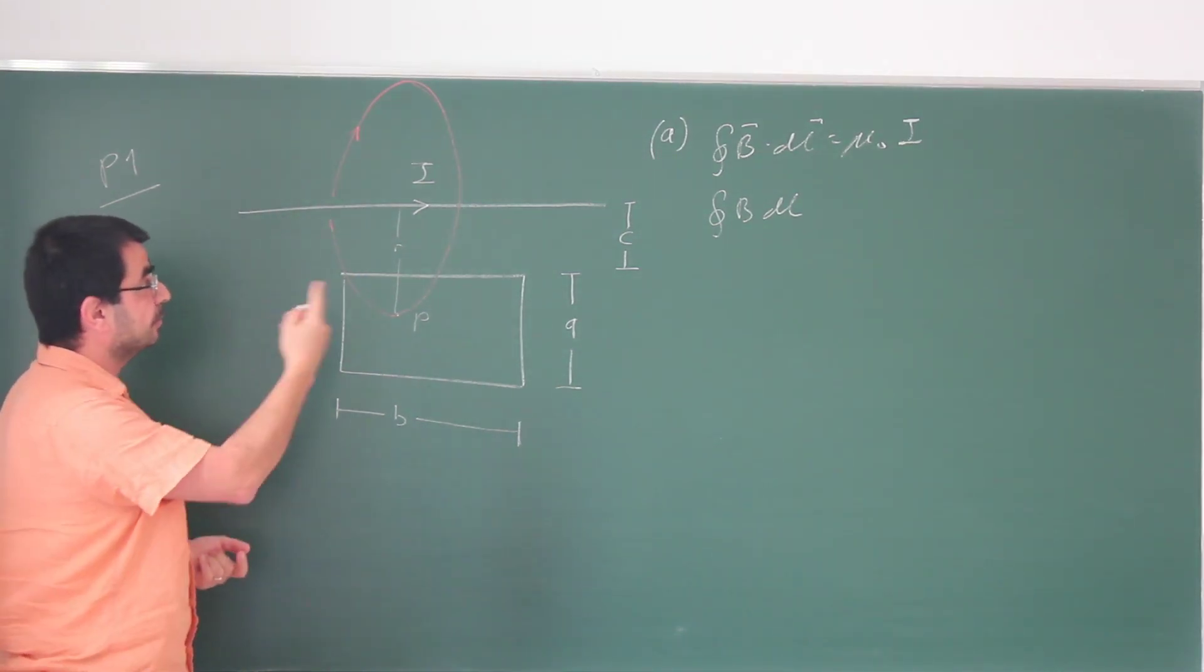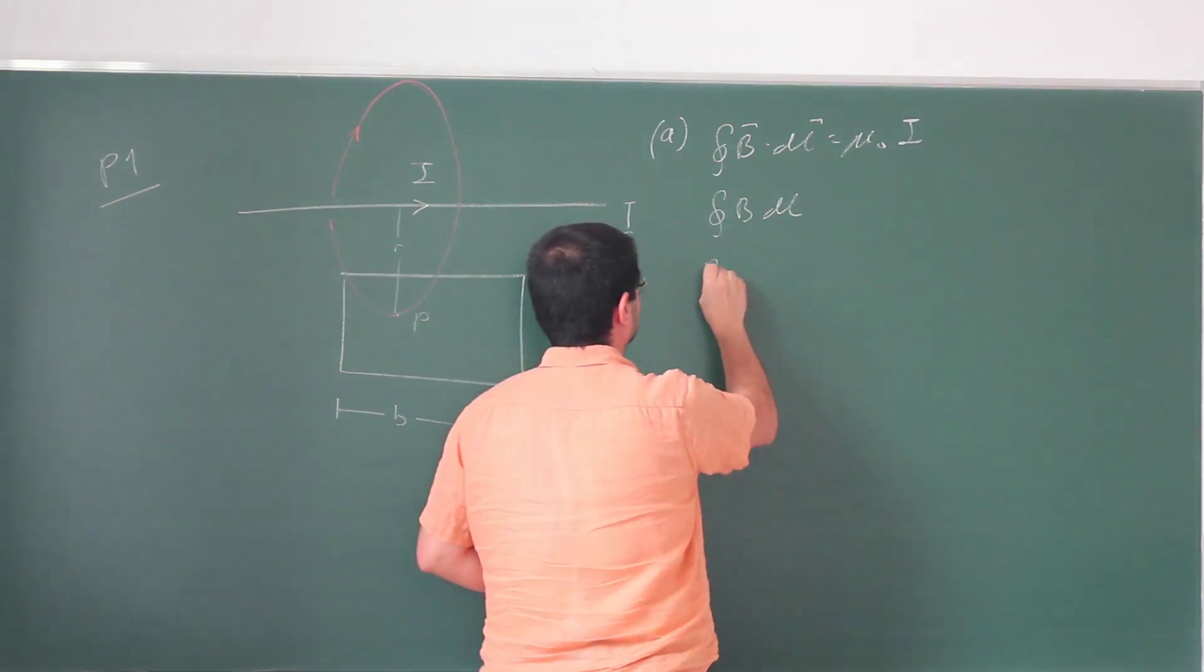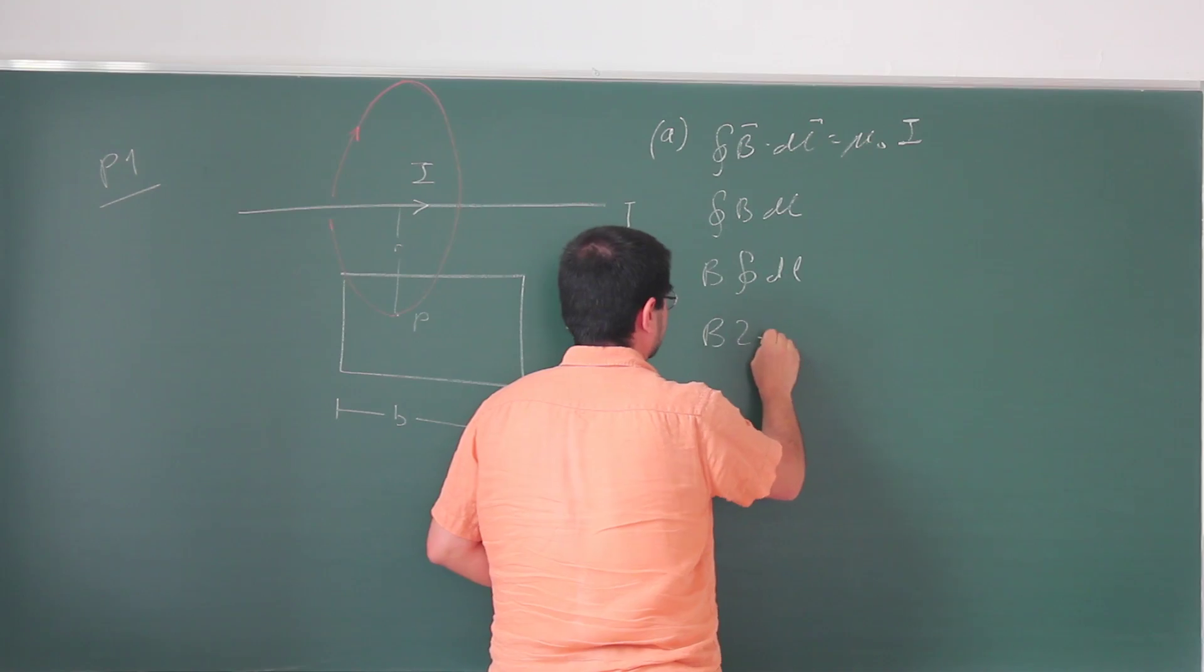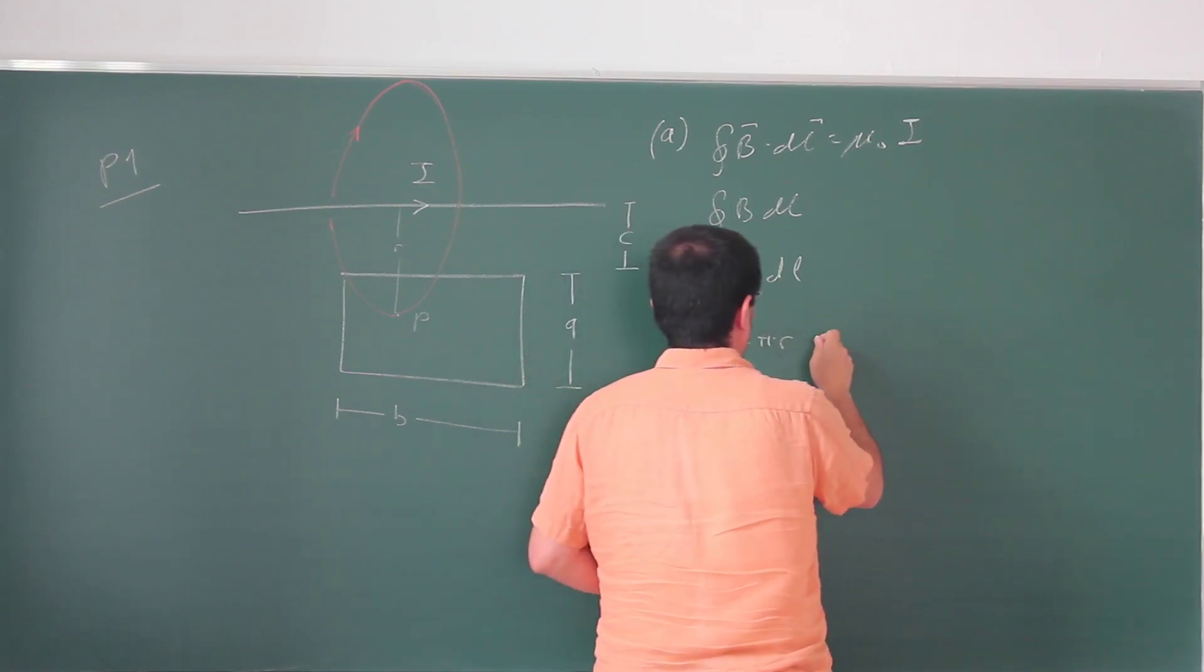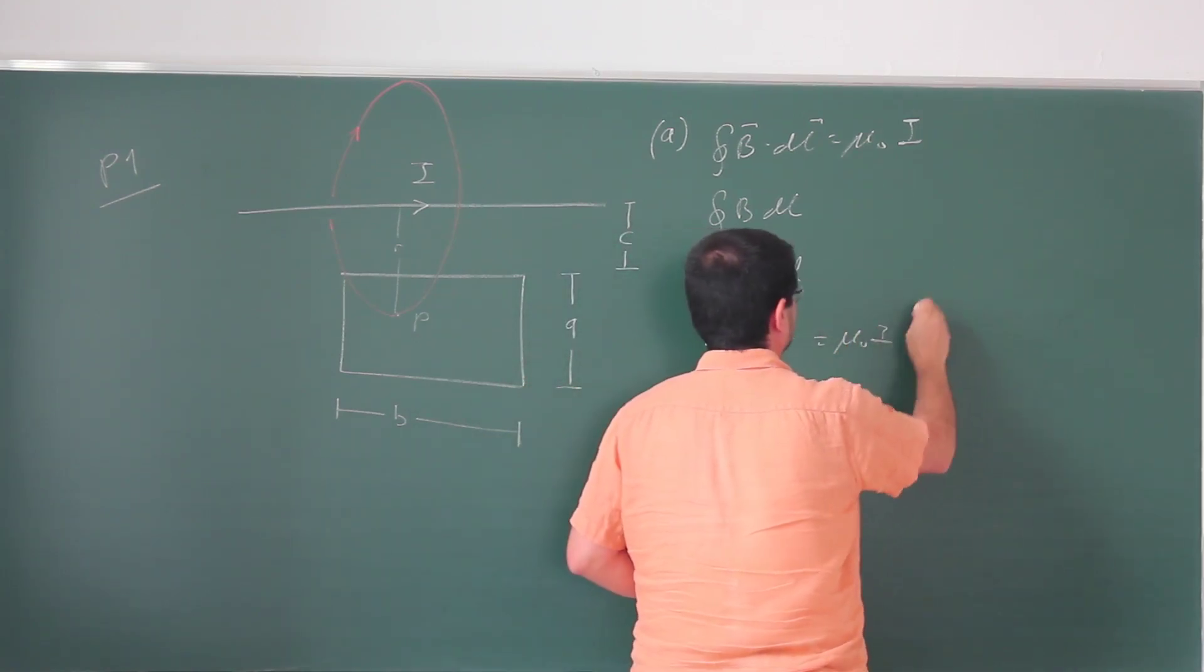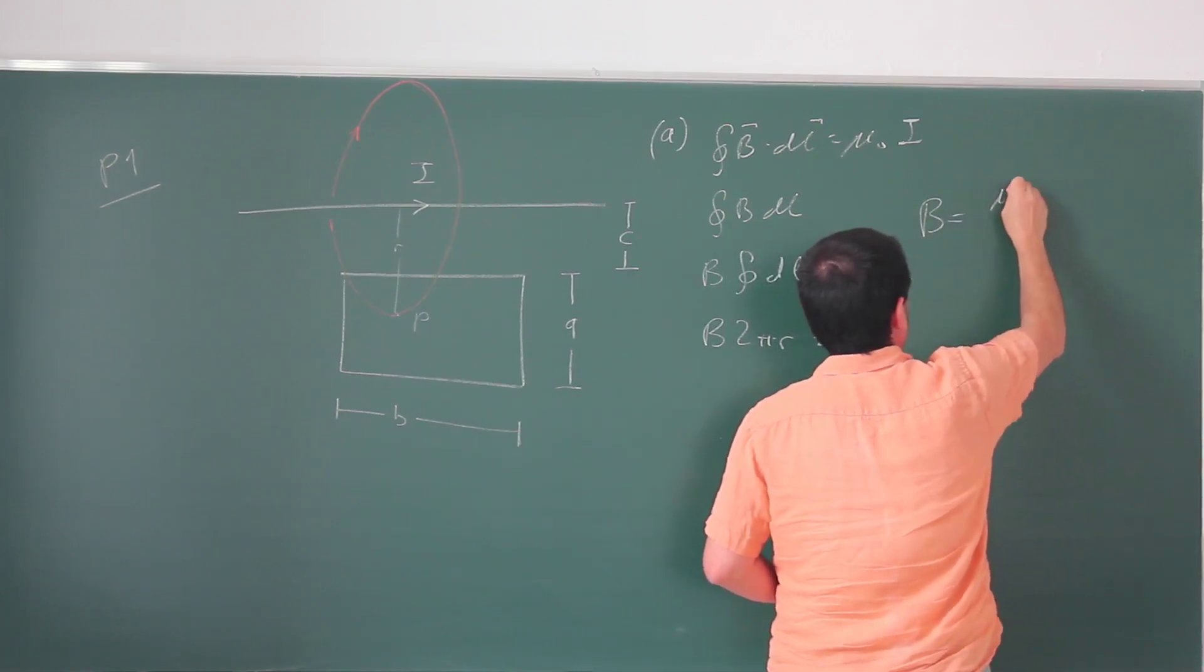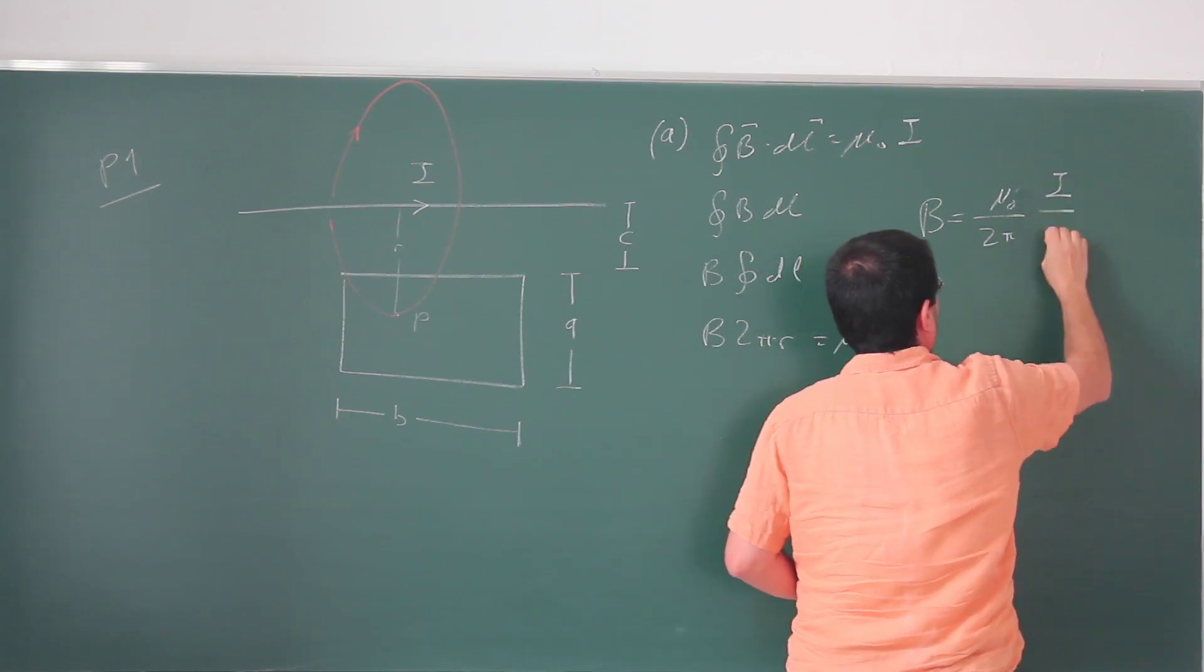Because of cylindrical symmetry magnetic field is constant, so I can take this out and then this becomes B times 2 pi R equals mu naught times I. So B is something that you of course knew already: mu naught I over 2 pi R.